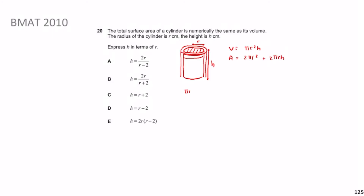Setting volume equal to surface area: πr²h equals 2πr² plus 2πrh. Factor the right side: take out 2πr, giving 2πr(r plus h). Cancel π and r from both sides: rh equals 2r plus 2h. Bring all h terms to one side: rh minus 2h equals 2r. Factor out h: h(r minus 2) equals 2r. Therefore h equals 2r over (r minus 2), which maps to option A.